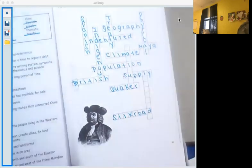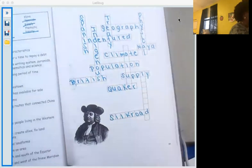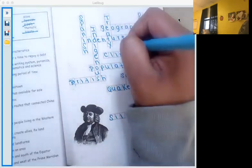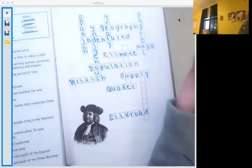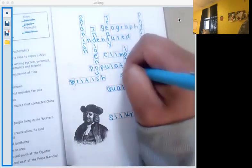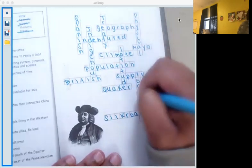Number seven. Lines used to measure the distance north and south of the equator, so north and south is up and down, so that would be longitude. Oh hang on, that would be latitude, I'm sorry. And then number 13 is going to be longitude.